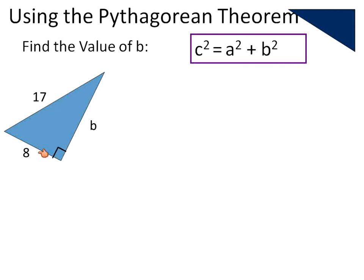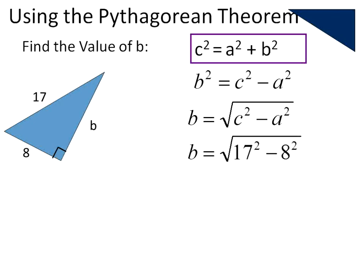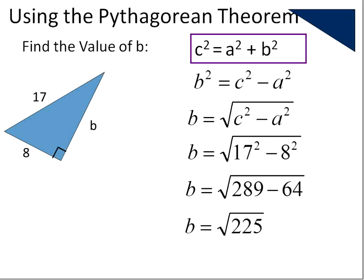Let's see another one where we're given a different hypotenuse and a leg, and we're not given our length for B. We follow exactly the same steps: rearrange the equation by subtracting A squared from both sides, then take the square root of both sides. The square root of B squared is just B, giving us B equals the square root of C squared minus A squared. Substituting what we know: 17 is our hypotenuse, 8 is our leg. 17 squared is 289, 8 squared is 64. 289 minus 64 gives us 225, and the square root of 225 gives us a length of 15.